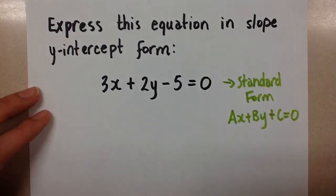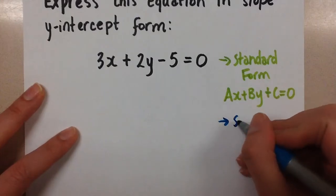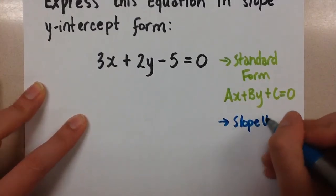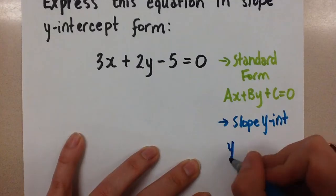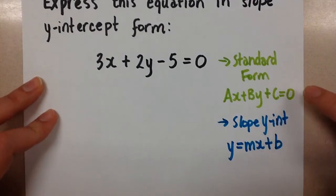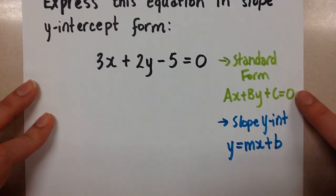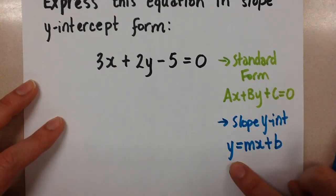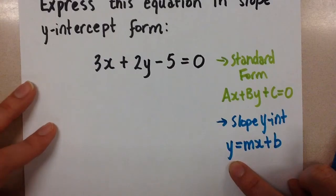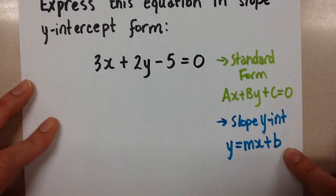So we want to change this to slope y-intercept form. And remember what slope y-intercept form looks like. Slope y-intercept form is the y equals mx plus b form. So in order to change the standard form to the slope y-intercept form, we're going to rearrange the equation using our opposite operations to get the y by itself. And when we isolate the y on one side of that equal sign, the rest will be in the mx plus b form.